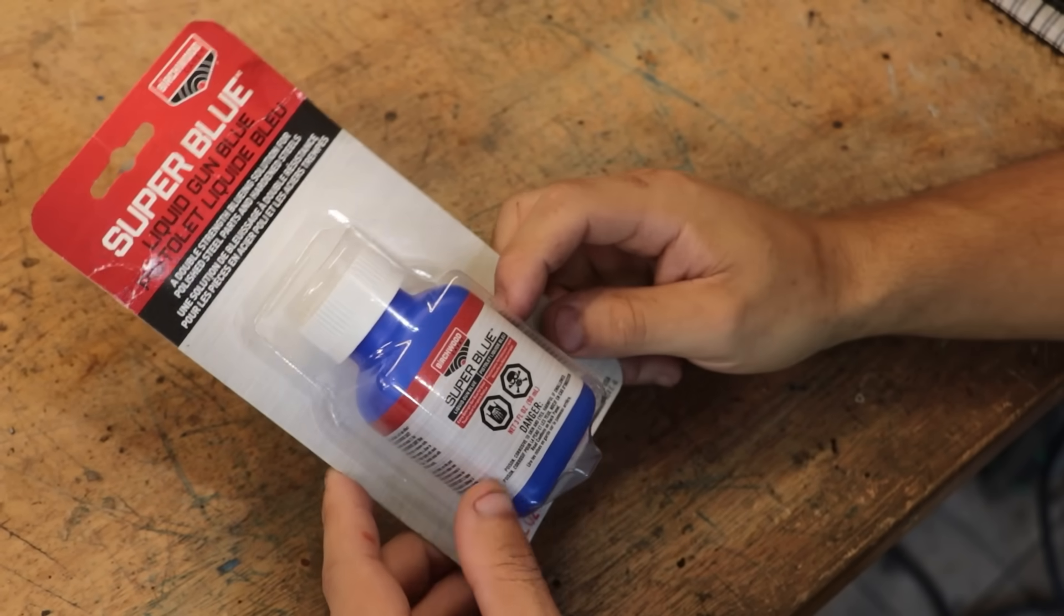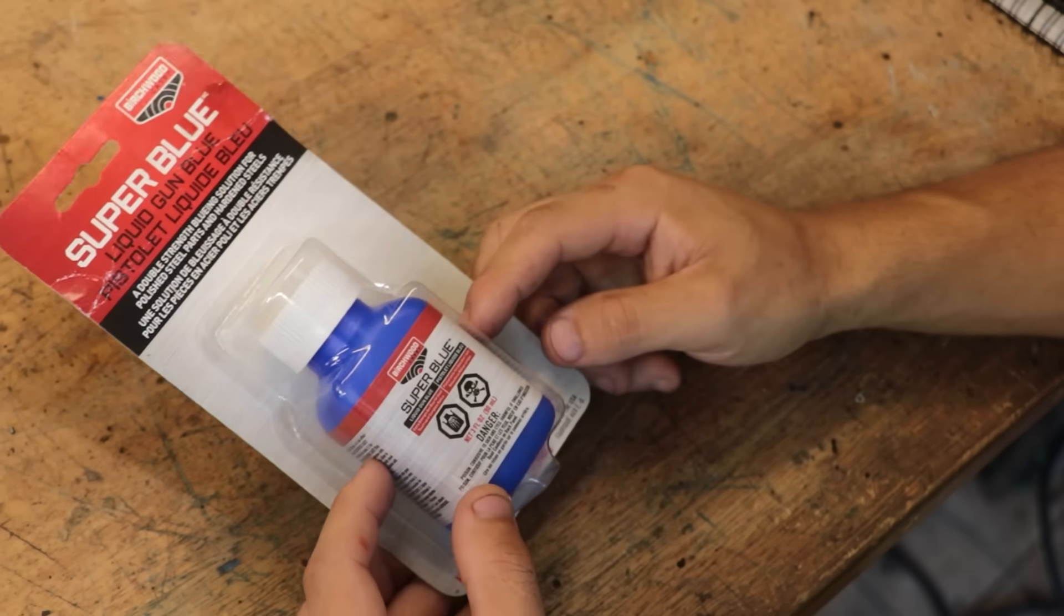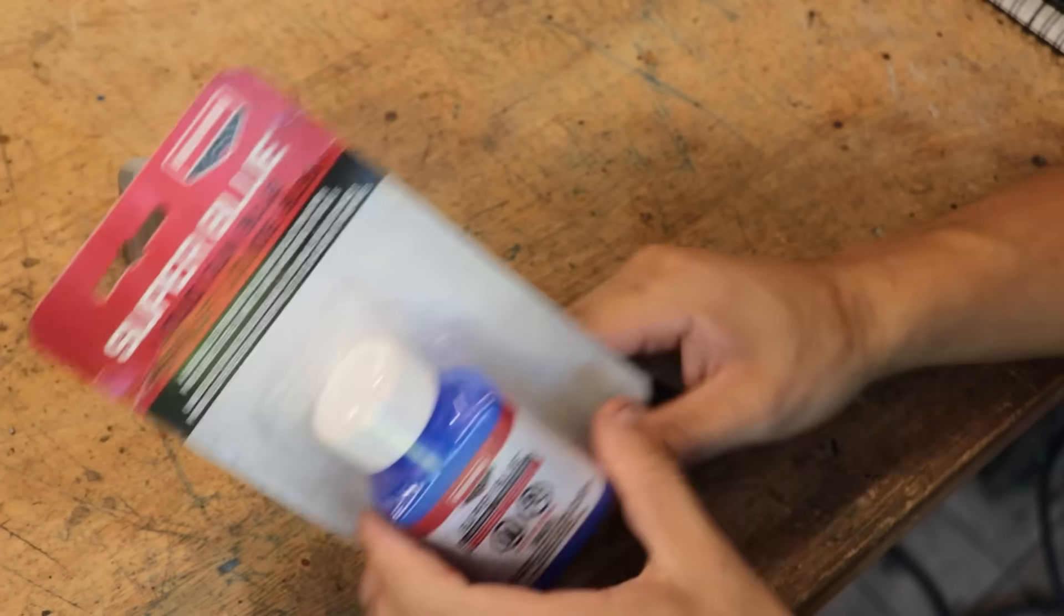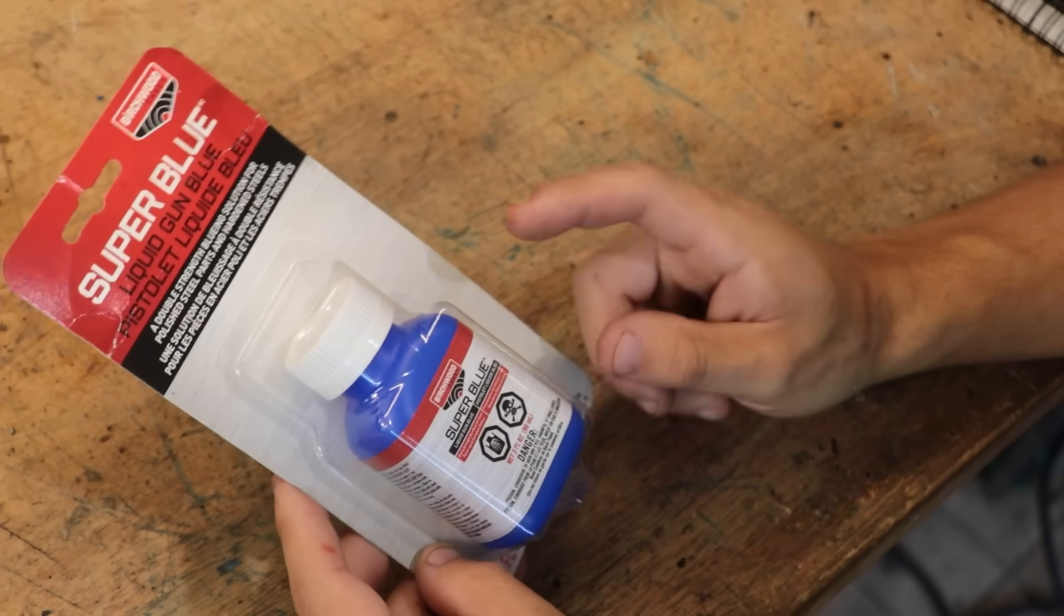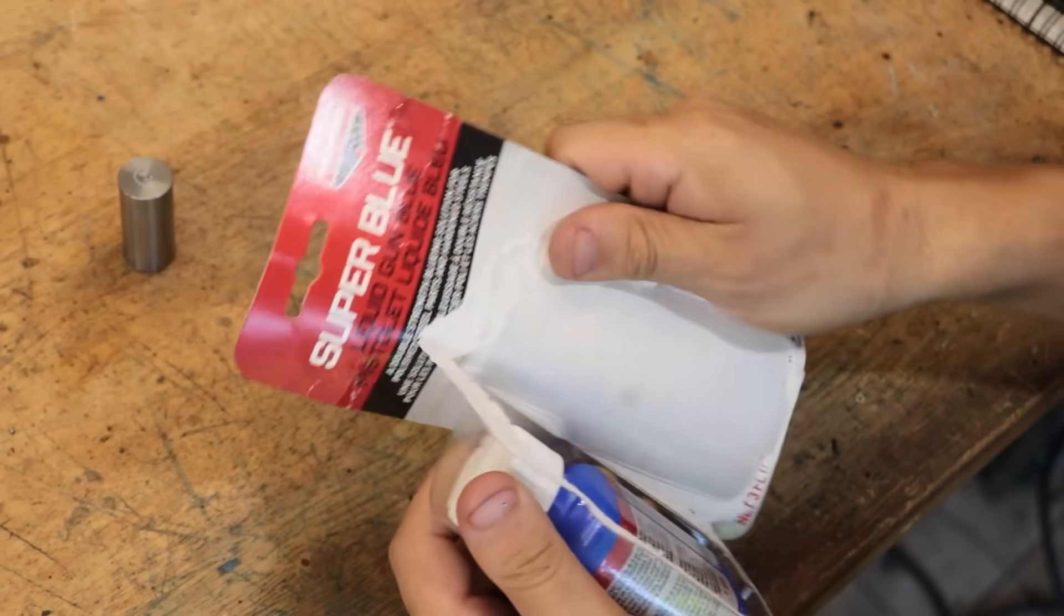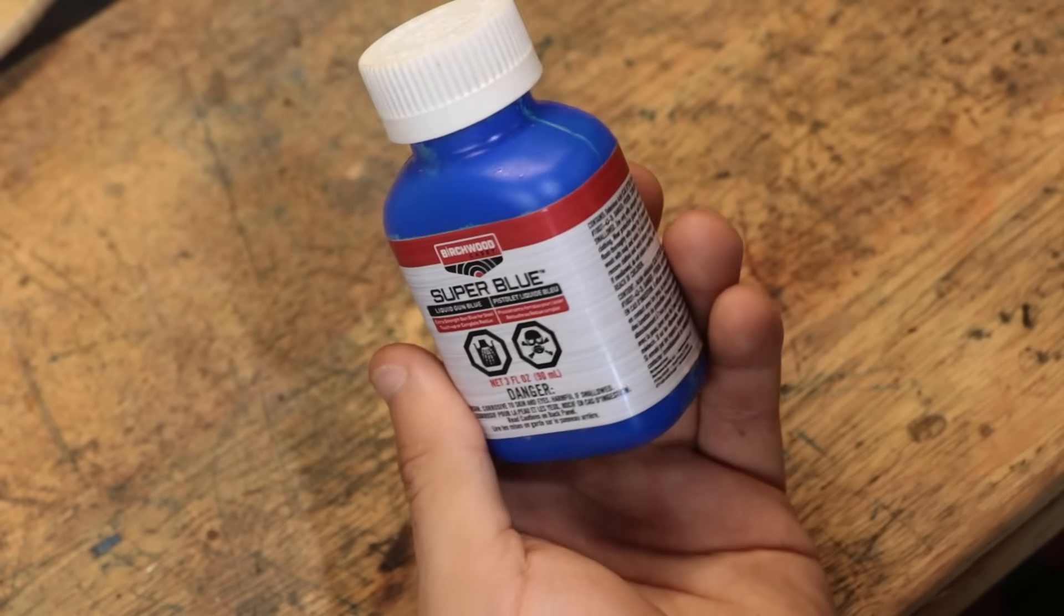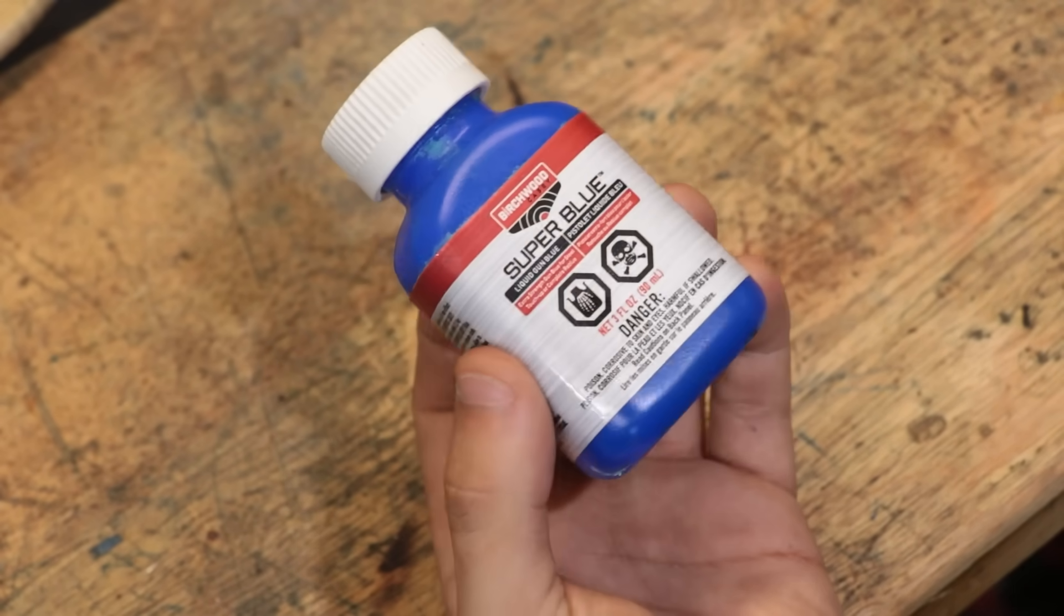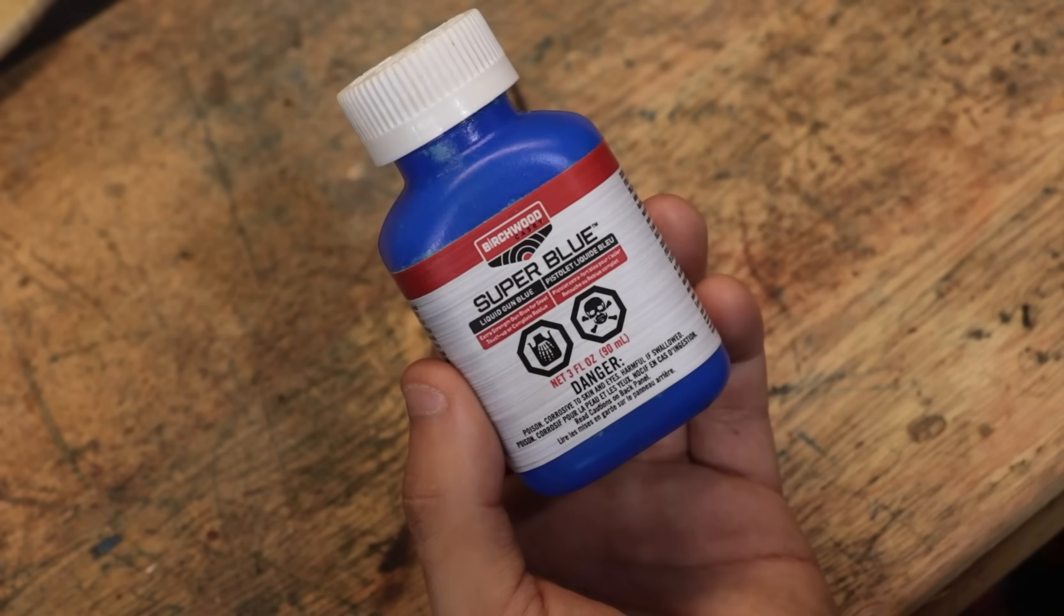So the first thing we need to buy is a jar of cold blue, and that's about it mostly. The stuff I picked up is called super blue, and it's primarily made for touching up scrapes and scratches on firearms. But really most people just use it for bluing pretty much whatever they got. The main thing is it needs to be made of steel. This bottle, about 90 mils, was about 30 bucks.